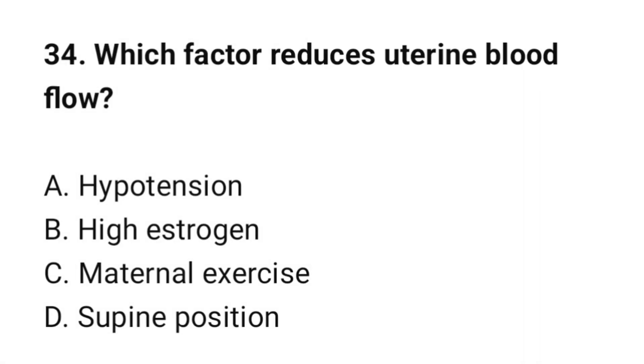Question number 34. Which factor reduces uterine blood flow? The correct option is D: sympathetic stimulation.